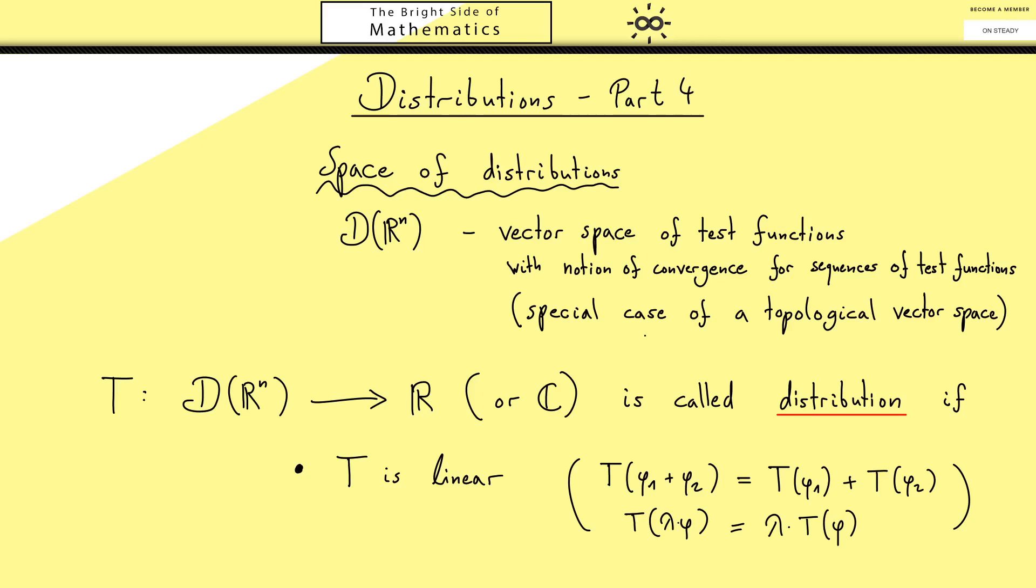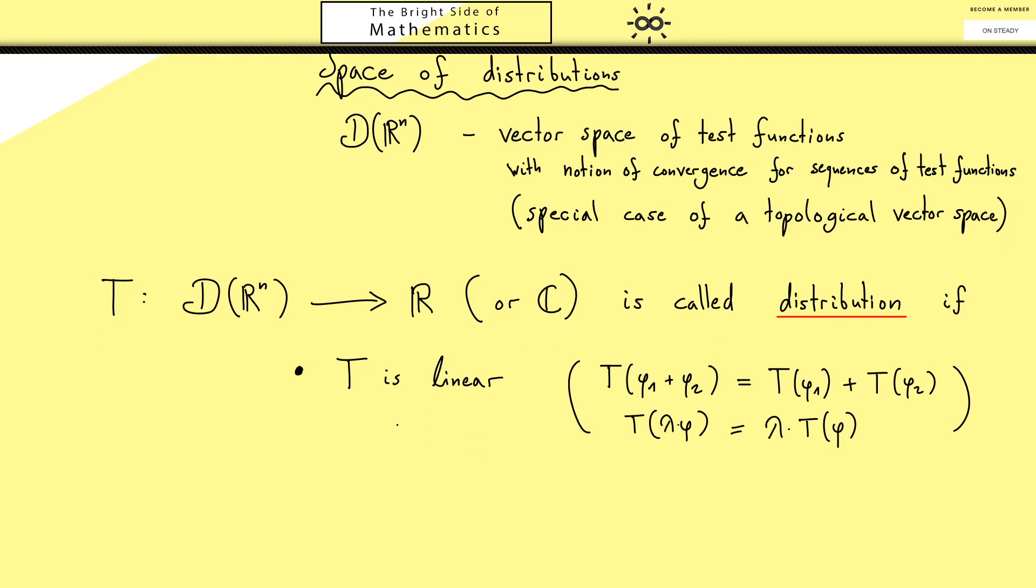Now the second property refers to the notion of convergence. More concretely, we want that the map T is continuous. At this point one could ask what does it mean to be continuous in our context here. And indeed this is the perfect question, but we can answer that immediately. You see, we have a notion of convergence for sequences of test functions, and that is what we can use because then we have a notion of being sequentially continuous. And that is what we mean here.